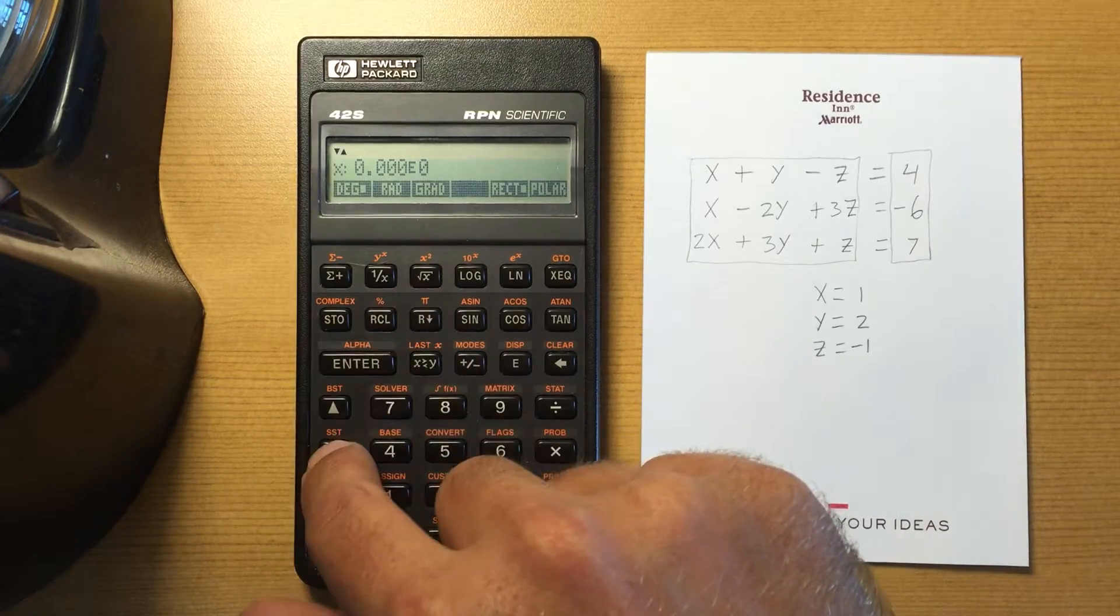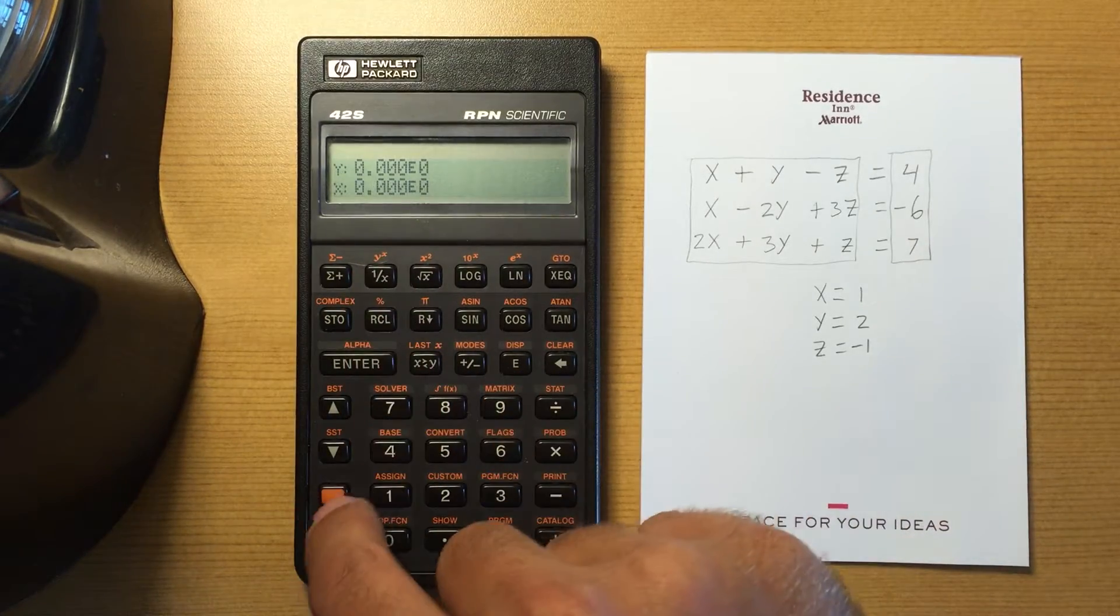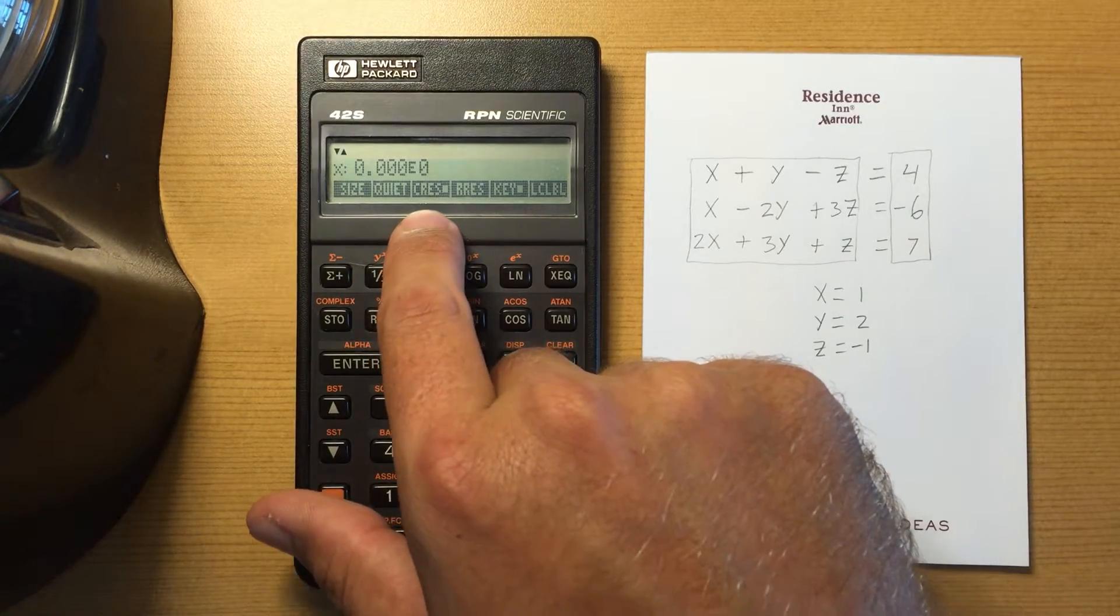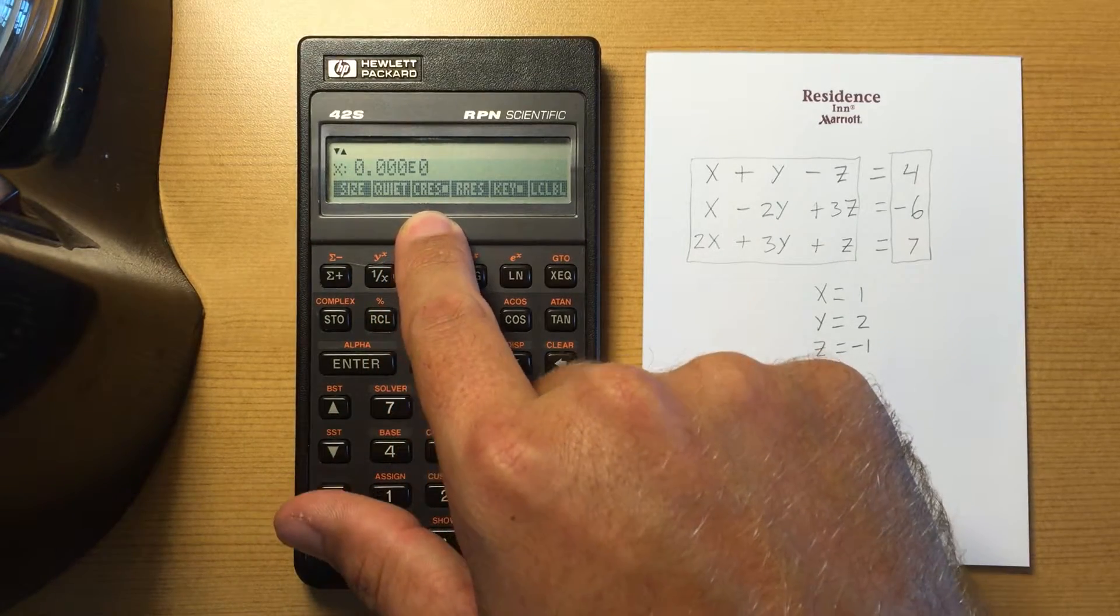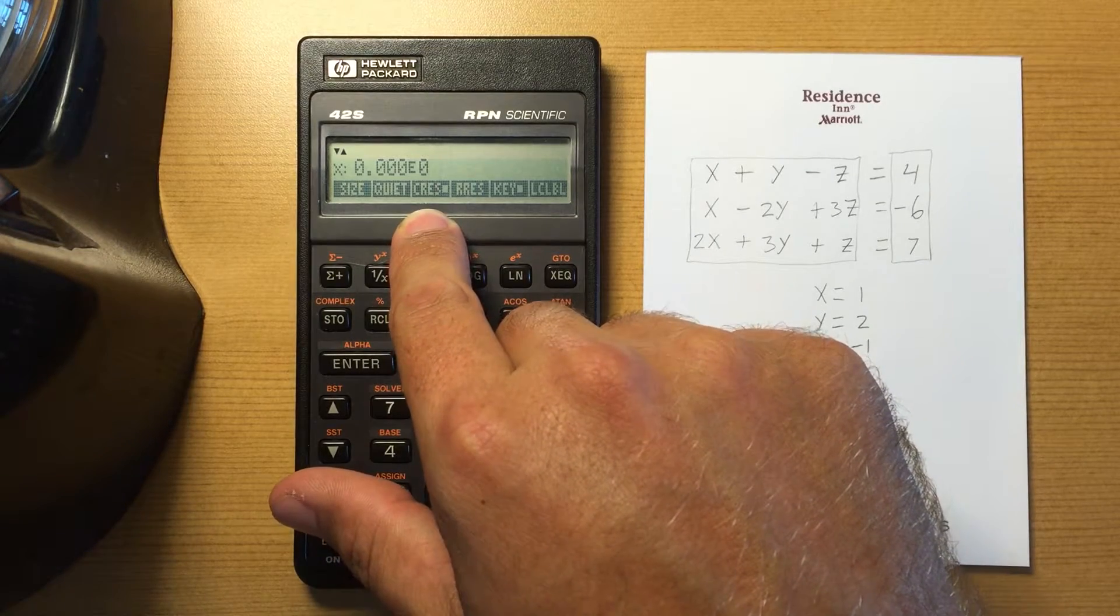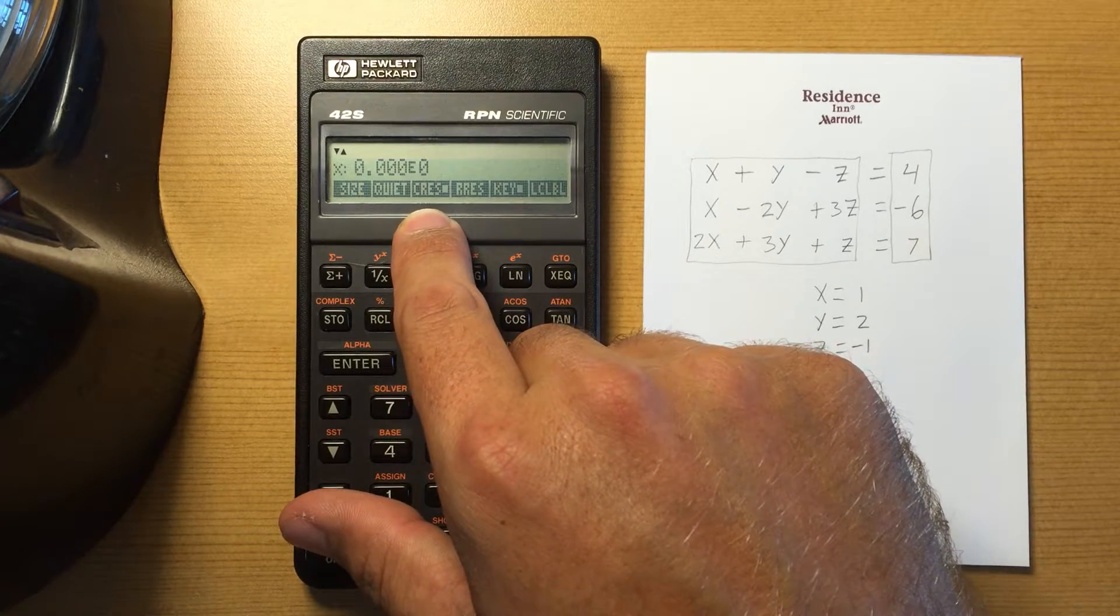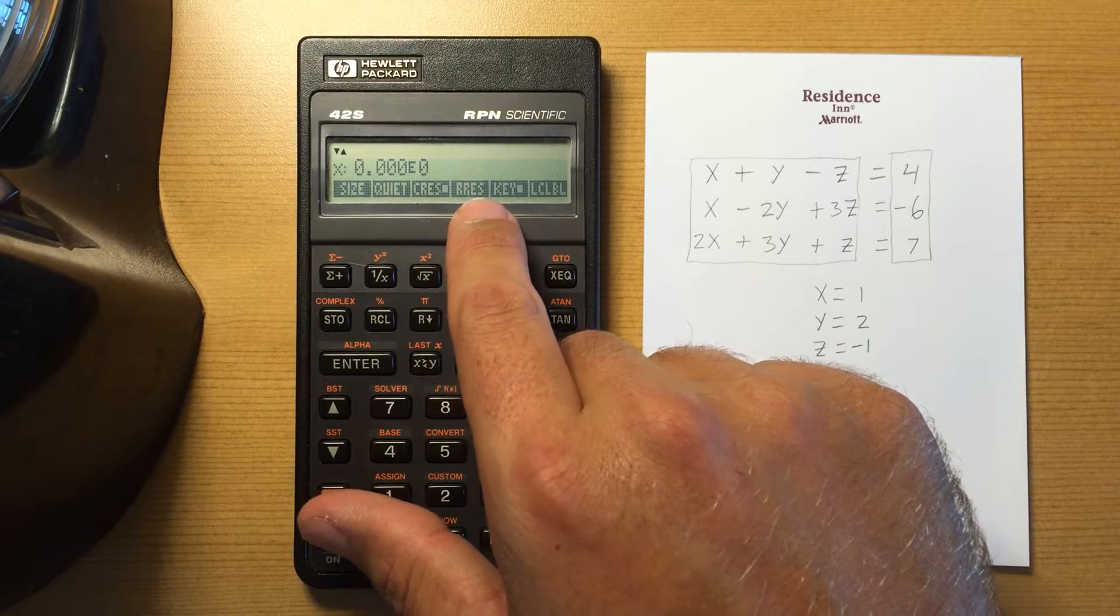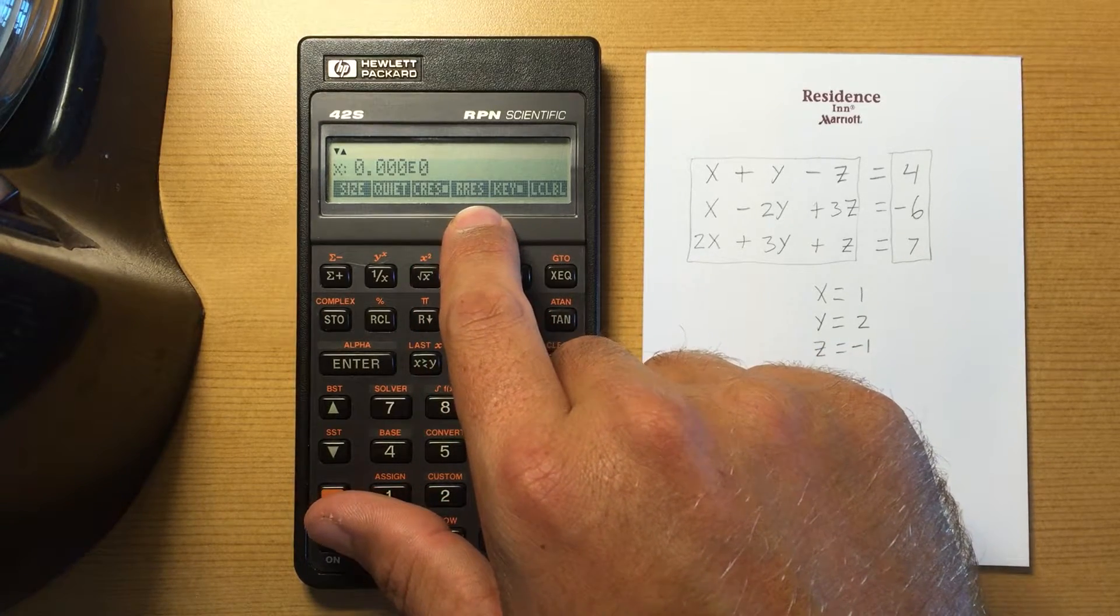I'm going to turn that back on. This is complex result. So if you're doing a calculation and it ends up with a complex number, then it will show the complex number. If you only want real results then you can choose the number one, real results.